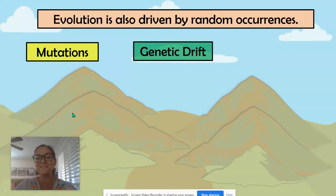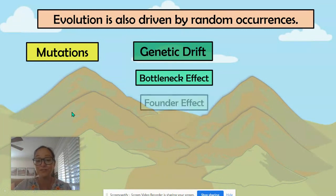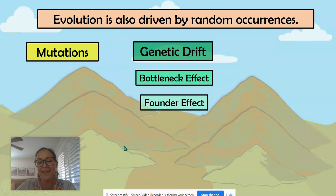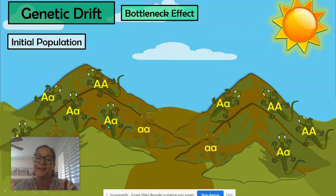Now we're going to talk about genetic drift. Genetic drift is a random process, and with this we have two kinds: the bottleneck effect as well as the founder effect.